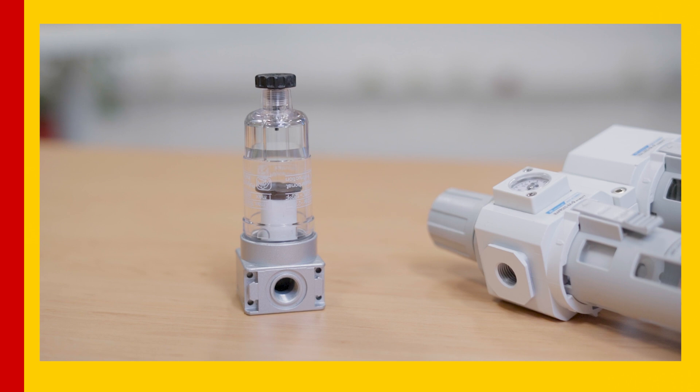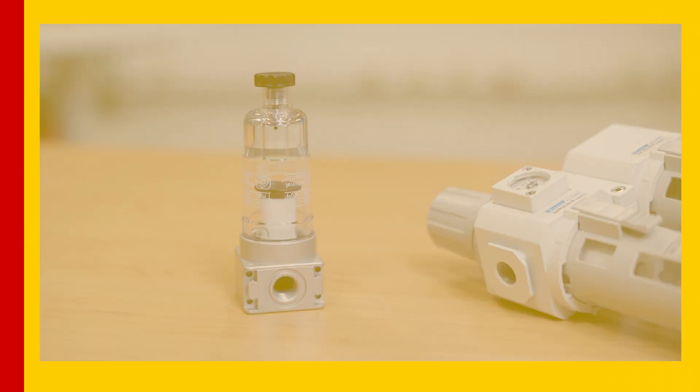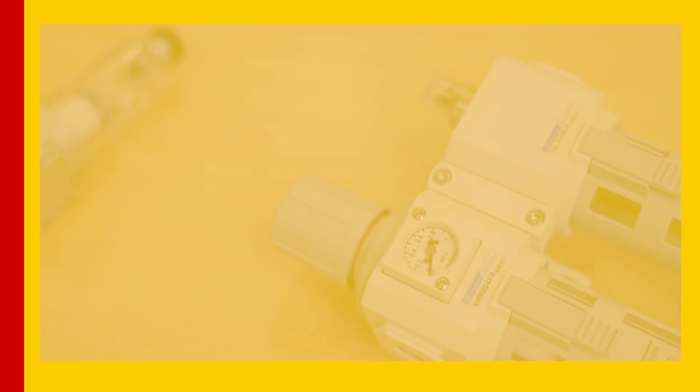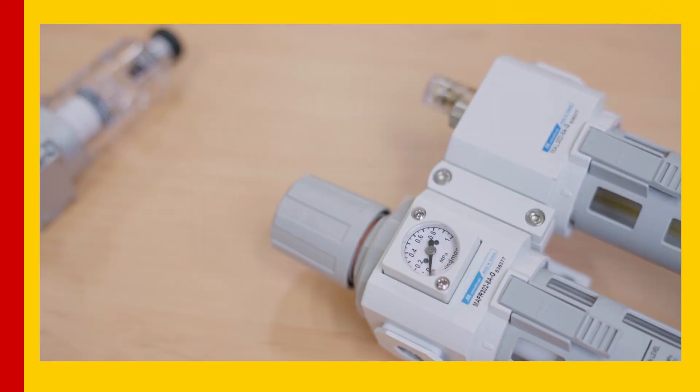So what is a pneumatic filter? A pneumatic filter is a device that is used to filter contaminants such as dirt, dust, and moisture from a compressed air system. This is important because contaminants can cause damage to pneumatic components and reduce the efficiency of a system. These contaminants can come from various sources, such as the air compressor itself, the piping, or the environment.